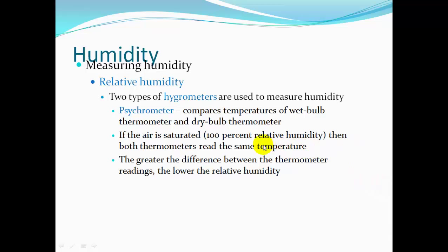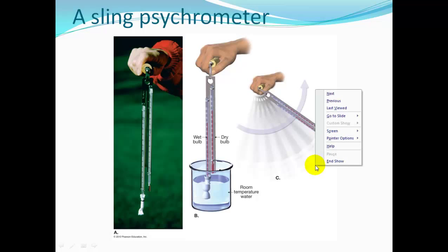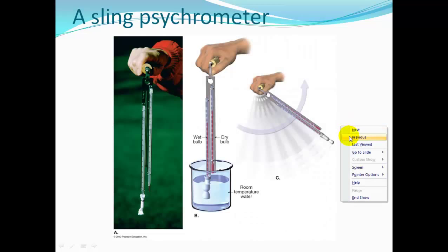There are two types of hygrometers — tools used to measure humidity. A psychrometer compares the temperature of a wet bulb thermometer and a dry bulb thermometer. If the air is saturated at 100% relative humidity, both thermometers read the same temperature. The greater the difference between thermometer readings, the lower the relative humidity. Here's the sling psychrometer — one thermometer bulb is dry, and the other is wrapped in gauze dipped in water. You sling it around, and if the wet and dry bulb temperatures are equal, then you have 100% relative humidity.